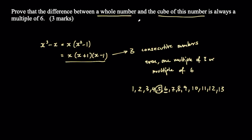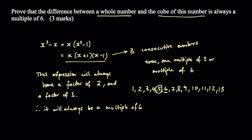To finish the question, all you need to say is that this expression will always have an even number and a multiple of three or six within it. So conclude that this expression will always have a factor of two and a factor of three, therefore it will always be a multiple of six. A factor of two means an even number; a factor of three means three, six, nine, twelve, and so on.